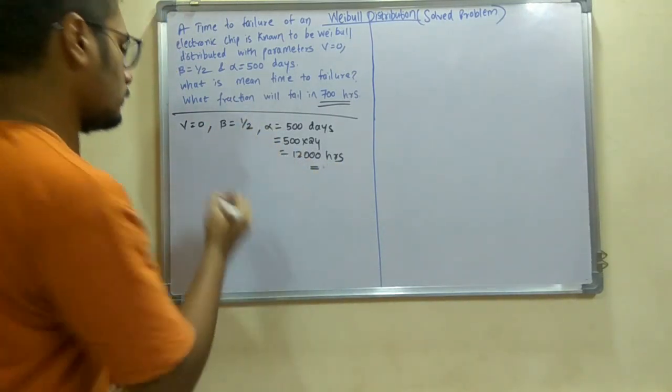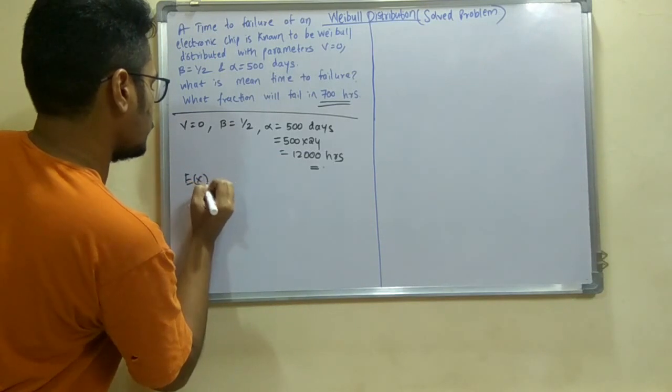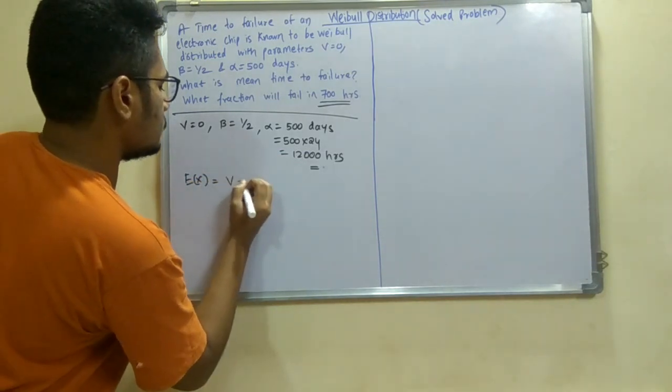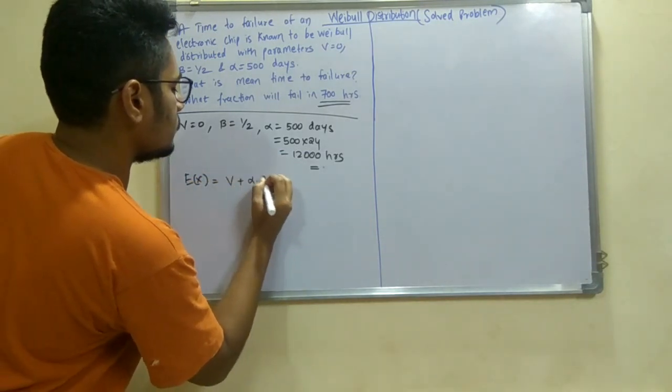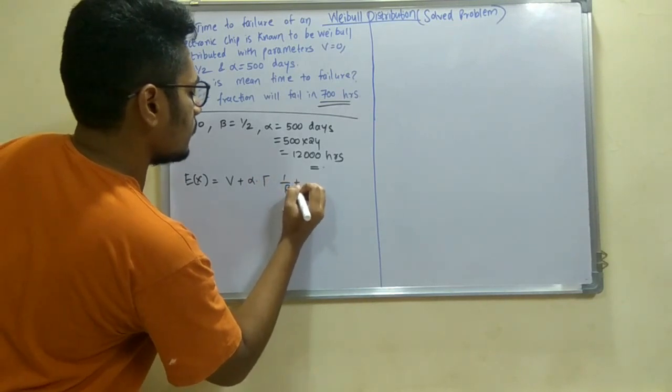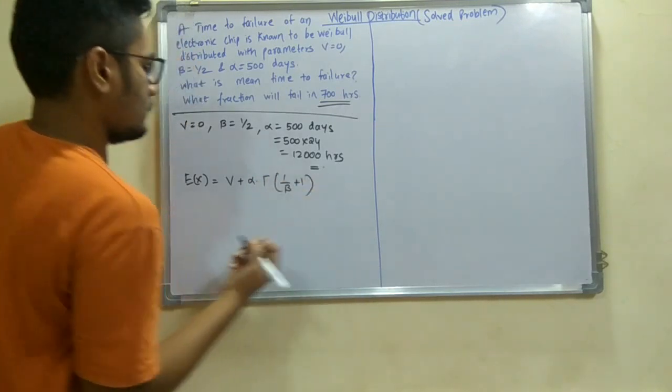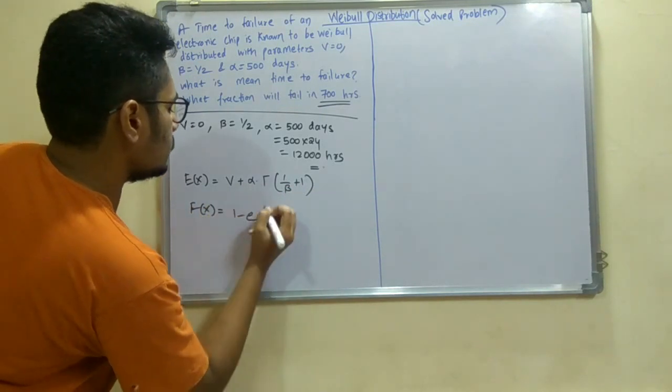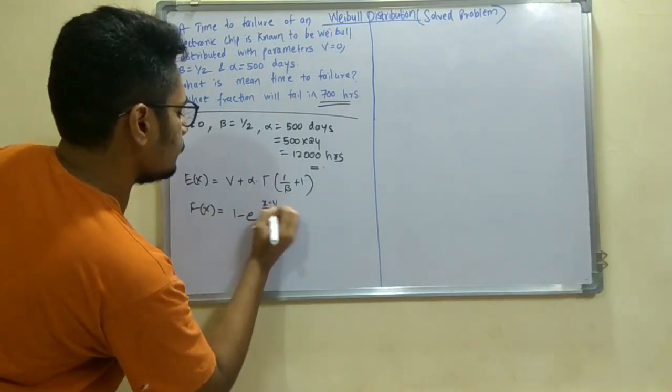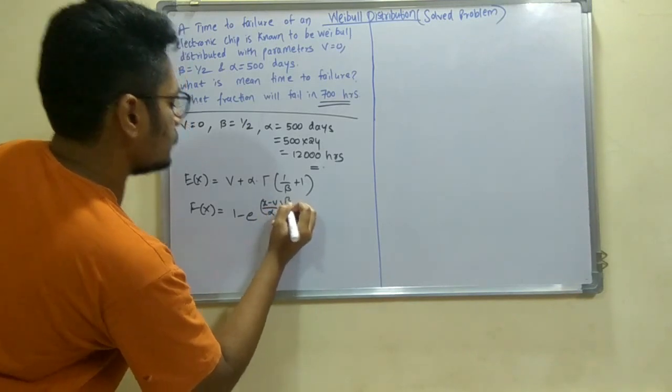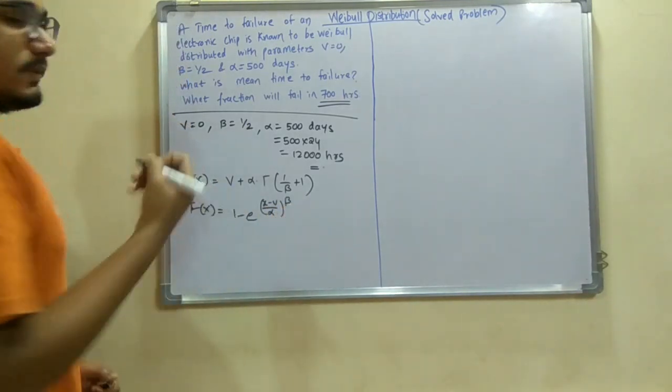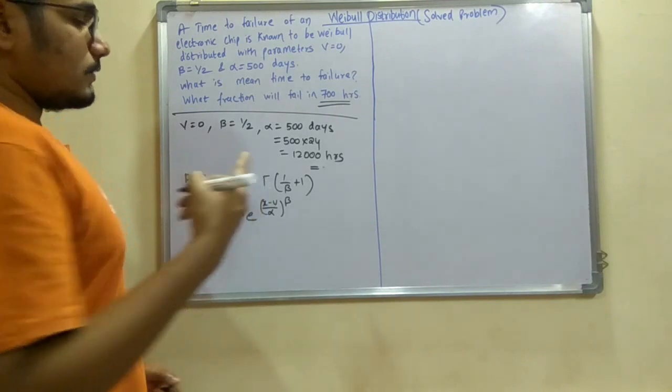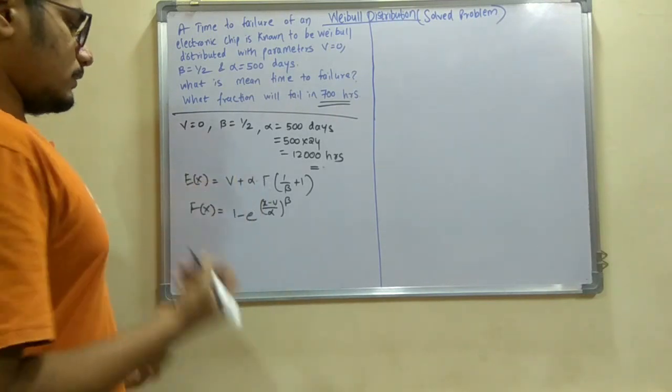Next, what is the mean time to failure? So we have to calculate the mean, E(x), which is v plus alpha into gamma of 1 by beta plus 1. And we have capital F(x), which is 1 minus e raised to minus (x minus v) upon alpha, raised to beta. So these are the two formulas that we are going to apply to solve the problem.